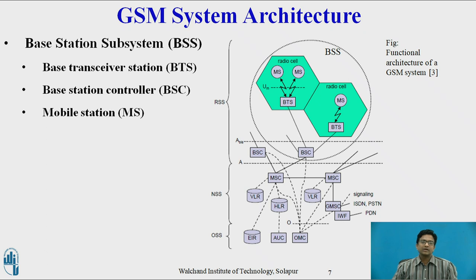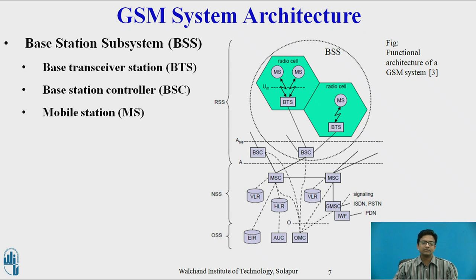The Base Trans Receiver Station (BTS) comprises all radio equipment like antennas required for signal processing and amplifiers necessary for radio transmission. BTS is mainly responsible for forming the radio cell. BTS is connected to the Mobile Station via the UIM Interface, which is the radio interface, and BTS is connected to BSC via the ABIS interface.